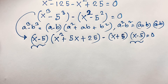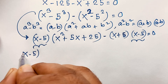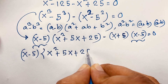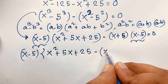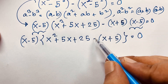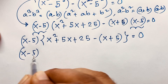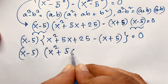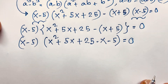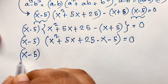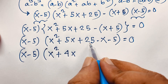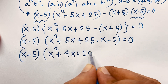Taking (x - 5) as a common factor: (x - 5) times [(x² + 5x + 25) - (x + 5)] = 0. Simplifying inside: x² + 5x - x + 25 - 5 = x² + 4x + 20. So we get (x - 5)(x² + 4x + 20) = 0.